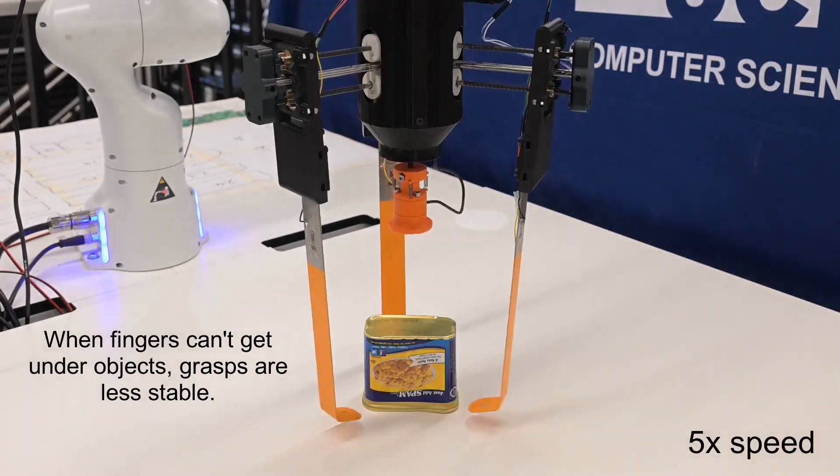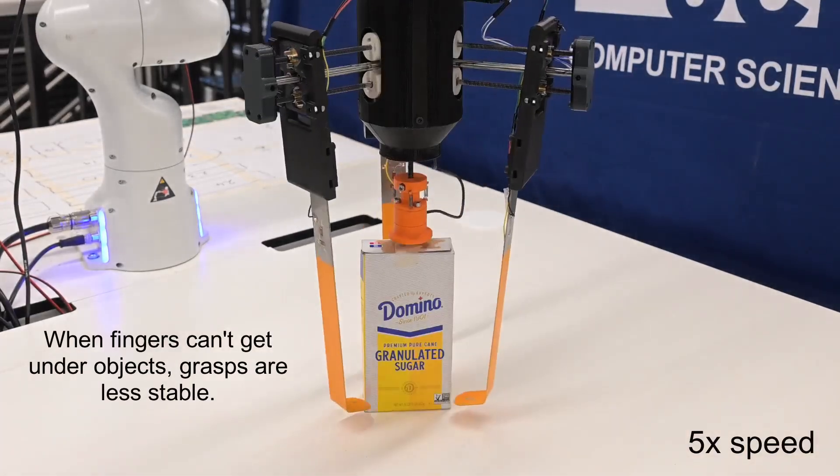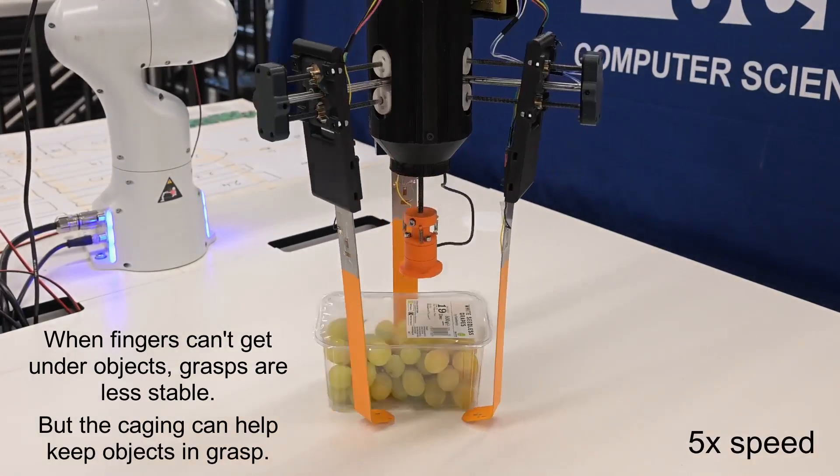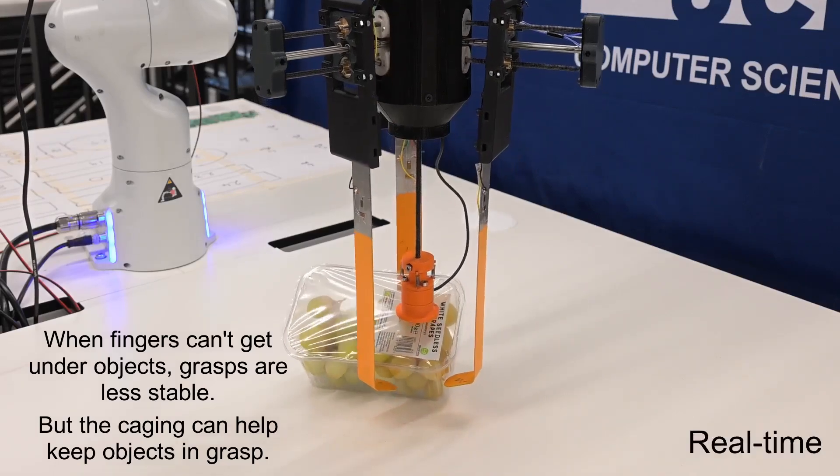When fingers can't get under objects, grasps are less stable. But, the caging effect can help keep some objects in grasp, even when they slip.